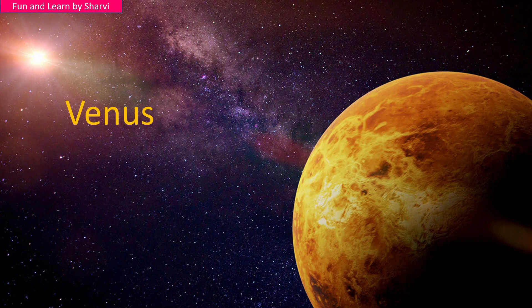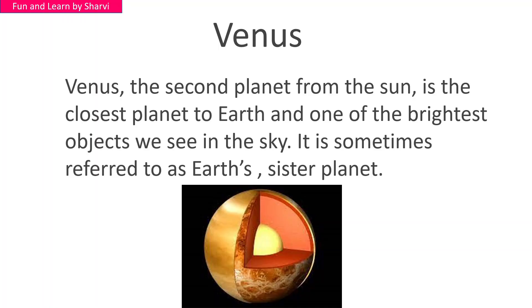Venus — the second planet from the sun — is the closest planet to Earth and one of the brightest objects we see in the sky. The brightest star-like object you see in the sky is actually Venus. Venus is sometimes referred to as Earth's sister planet.